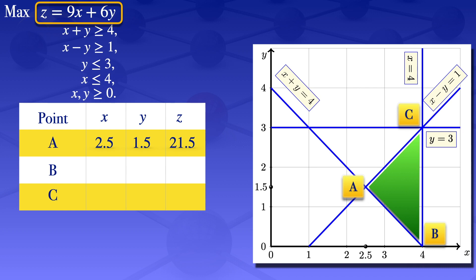Evaluating the objective function at point B: x = 4 and y = 0. So Z = 9(4) + 6(0) = 36.